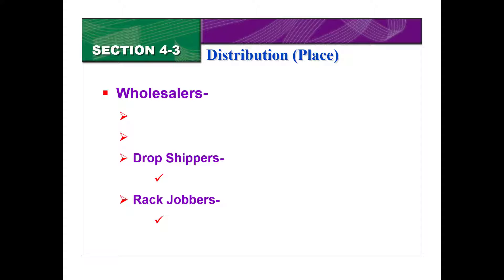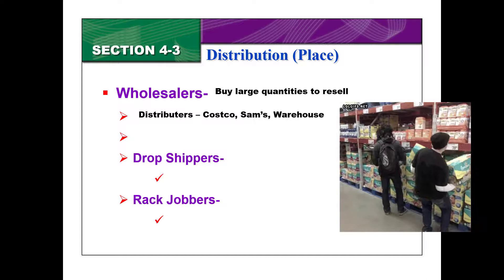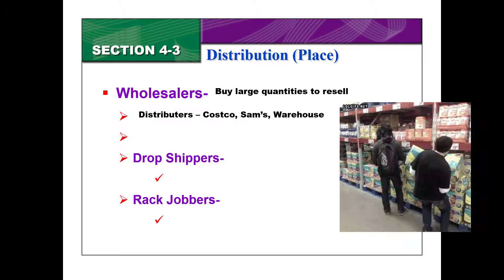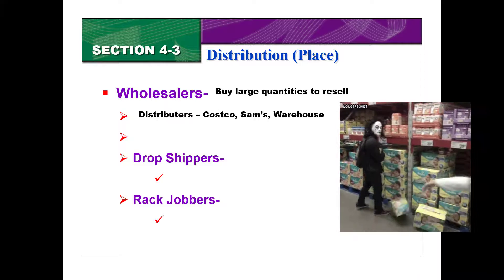There are a couple different types of intermediaries. The first type is a wholesaler. Wholesalers are the people who buy in large quantities and then resell that. So these could be distributors like Costco's or Sam's, or they could be big warehouses.